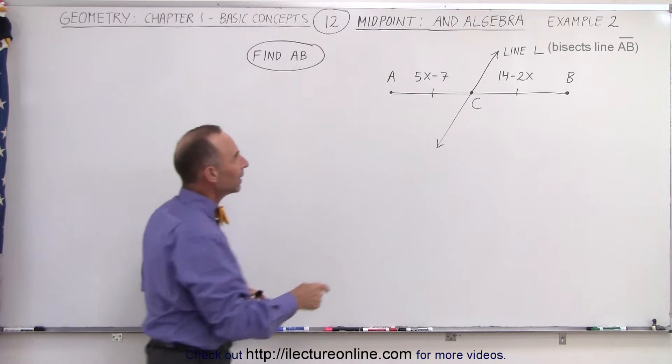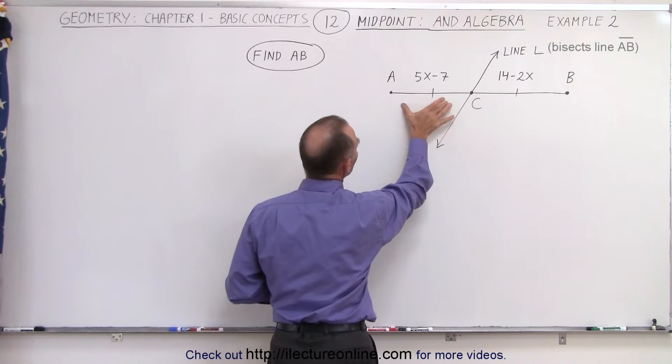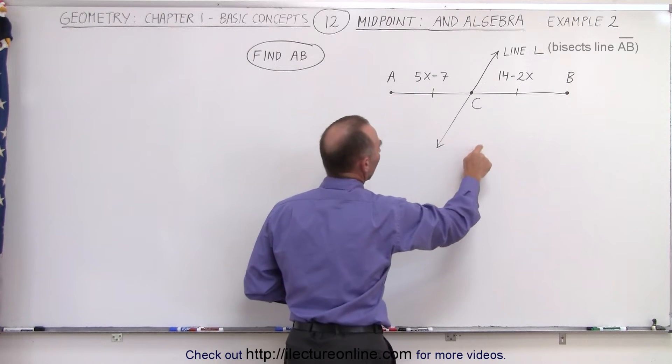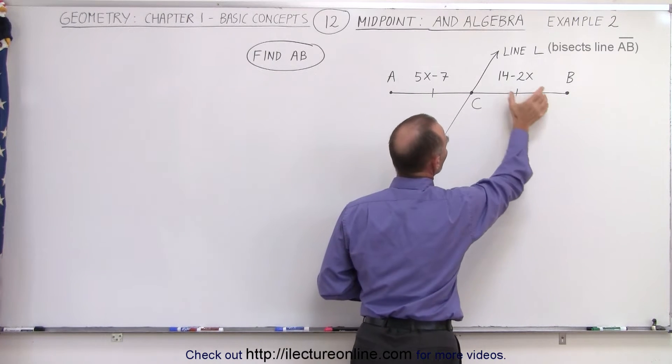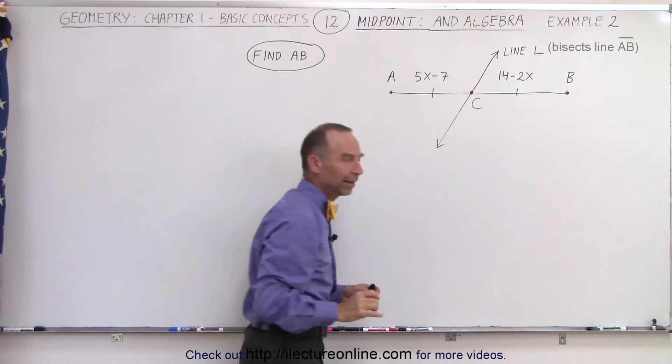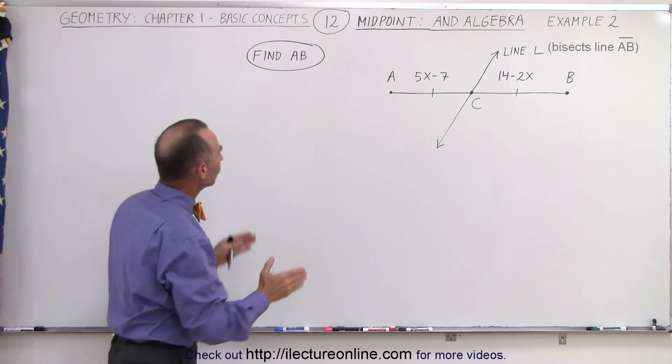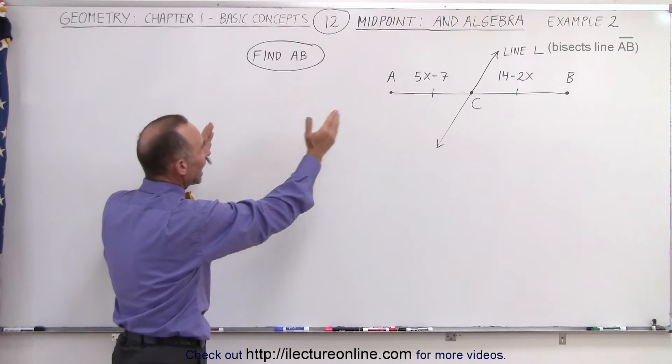We've also been indicated that the line segment from A to C is equal to 5x minus 7 and the line segment from C to B is equal to 14 minus 2x, and from that we're supposed to determine the length from A to B.